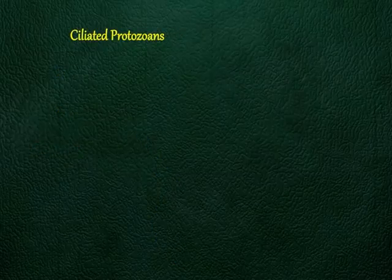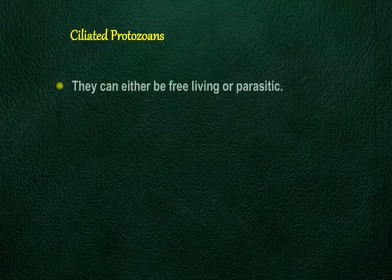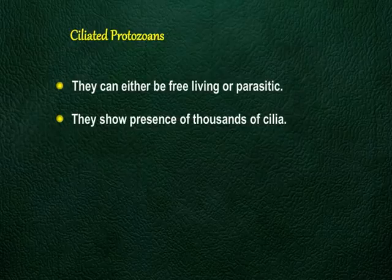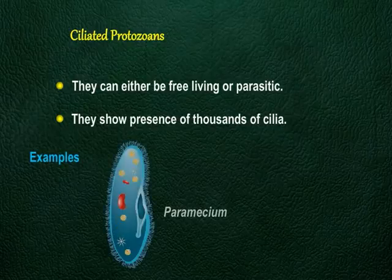Ciliated protozoans are aquatic and actively moving organisms. They show the presence of thousands of cilia on their body, and the common example is paramecium.